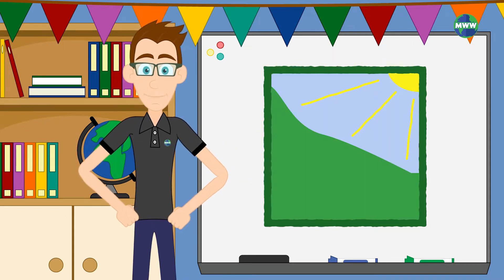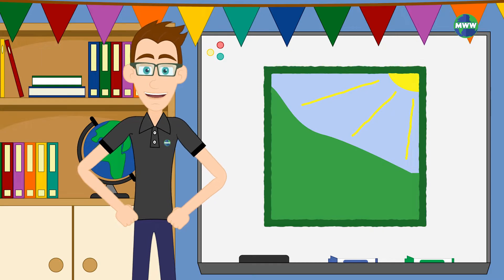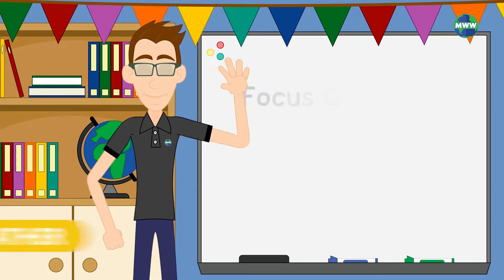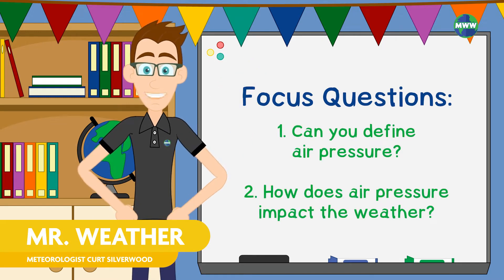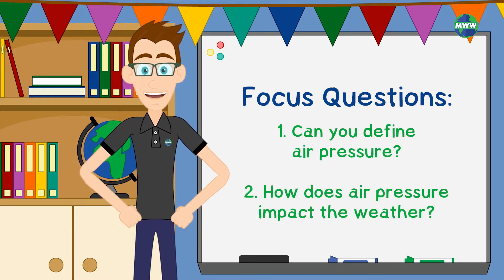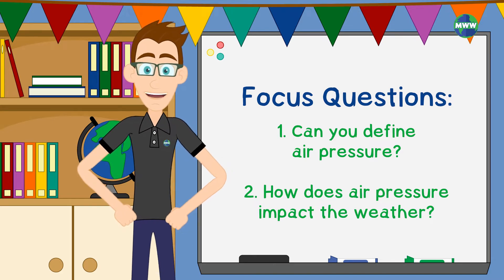In our atmosphere, pressure fluctuates from high to low due to uneven heating of the Earth's surface. Hi, I'm Mr. Weather, and in this lesson, you'll learn what air pressure is, how it's measured, and what weather to expect with different pressure systems.